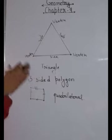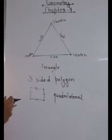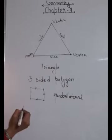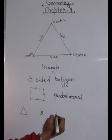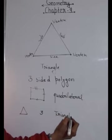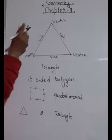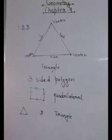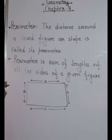On page number 133, you are having different types of polygons - triangle, quadrilateral, and others. You have to draw them in your copy, and write the number of their sides as well as their name. For example, first draw a triangle, it has three sides, and its name is triangle. Do this for all polygons on page 133.